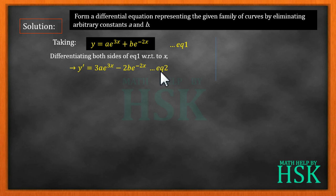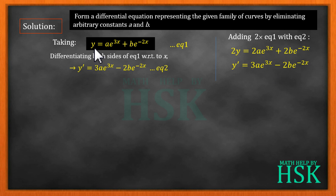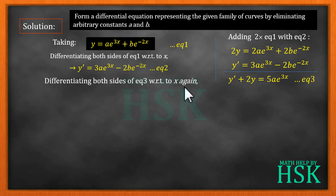Next, we simplify equations one and two so that the number of arbitrary constants reduces by one. We multiply equation one by two to get 2y = 2a·e^(3x) + 2b·e^(-2x), then add equation two to it. The 'b' terms become equal and cancel out on addition, giving us y' + 2y = 5a·e^(3x). We call this equation number three.